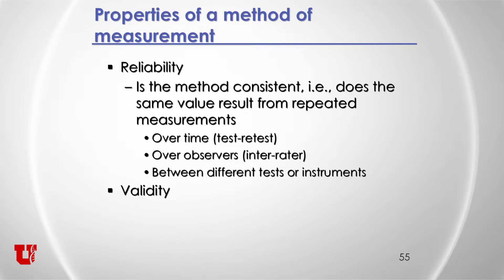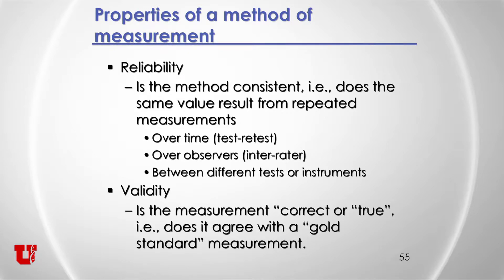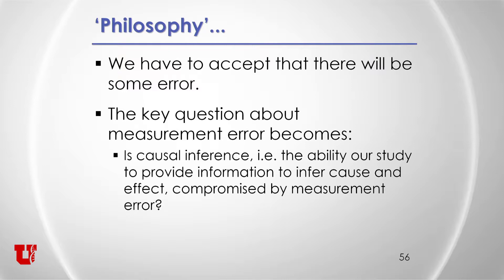In words: reliability — is the method consistent? Does the same value result from repeated measurements over time, over observers, between different tests or instruments? Validity — is the measurement correct or true? Does it agree with a gold standard measurement? In research, we have to accept that there will be some error. The question about measurement error becomes: is our causal inference — our study's ability to provide information to infer cause and effect — compromised by this measurement error?